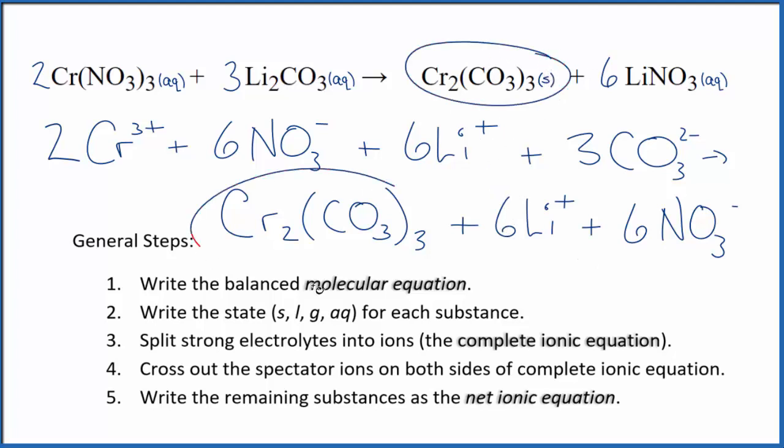We didn't split the solid apart here in our complete ionic equation. Now we can cross out the spectator ions, they're on both sides. In the reactants up top, I see six nitrate ions. Also in the products, these are spectator ions. Cross them out.